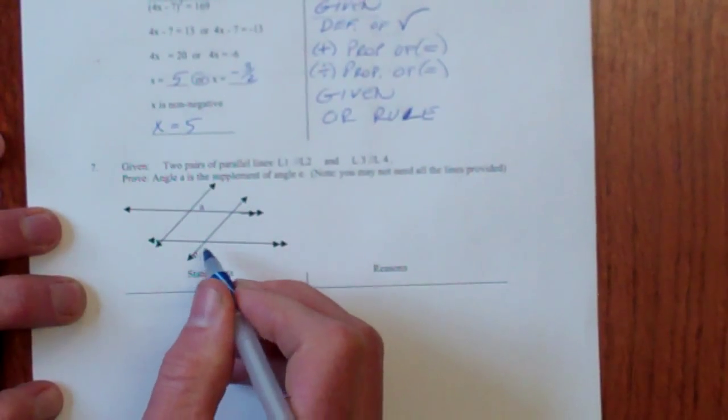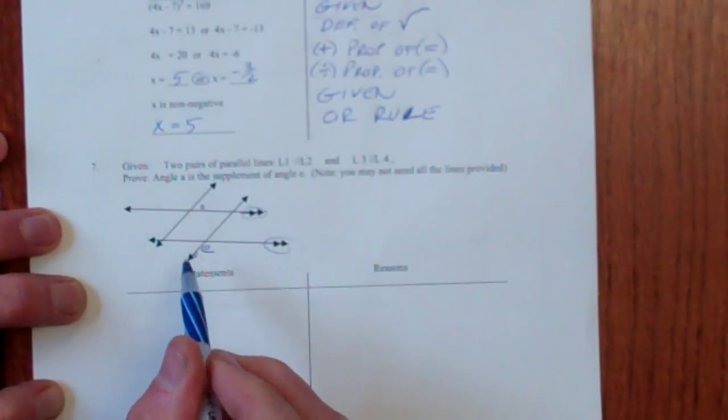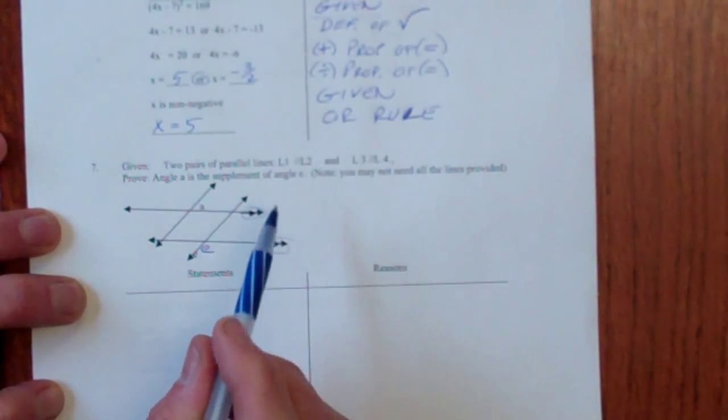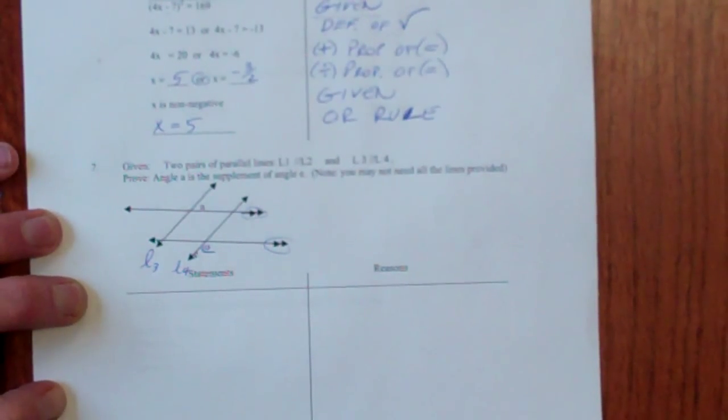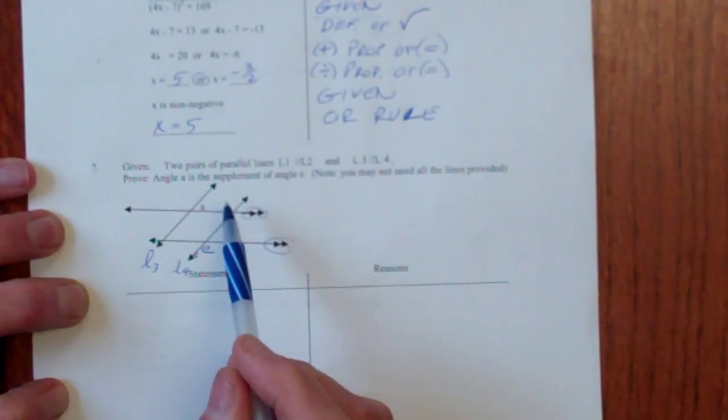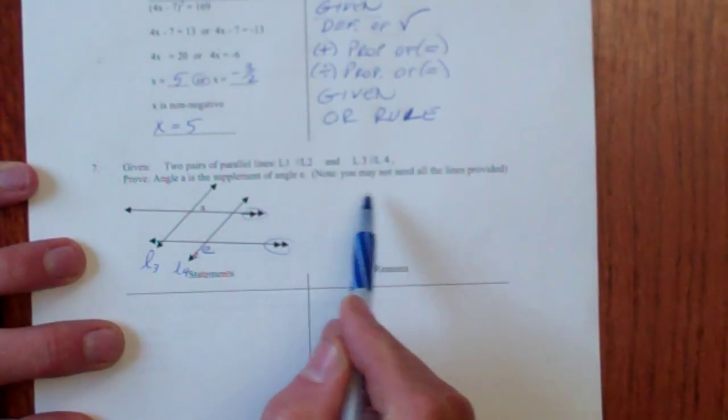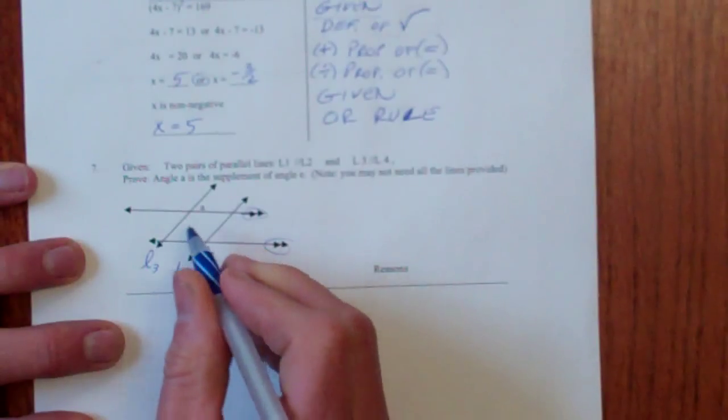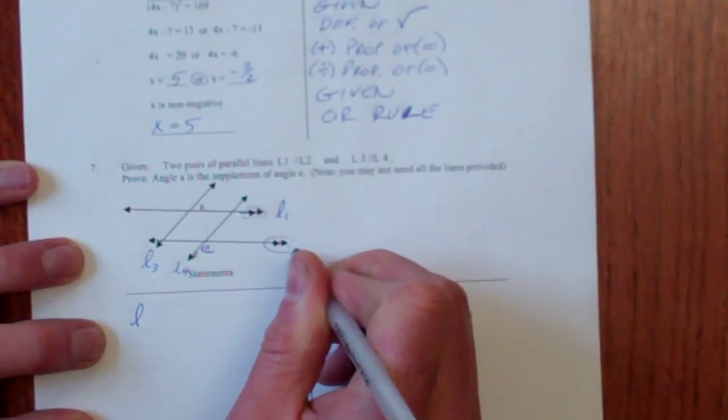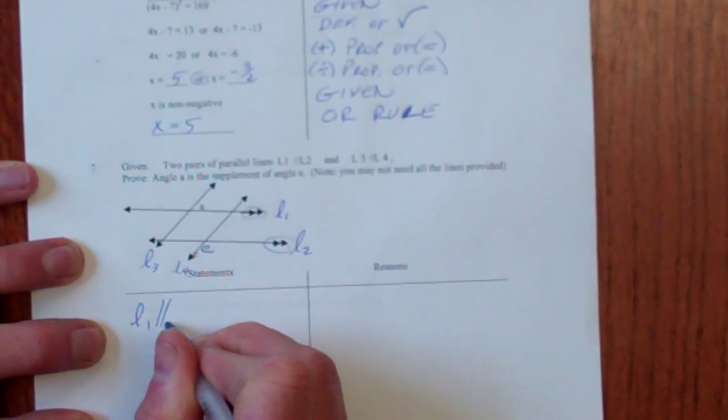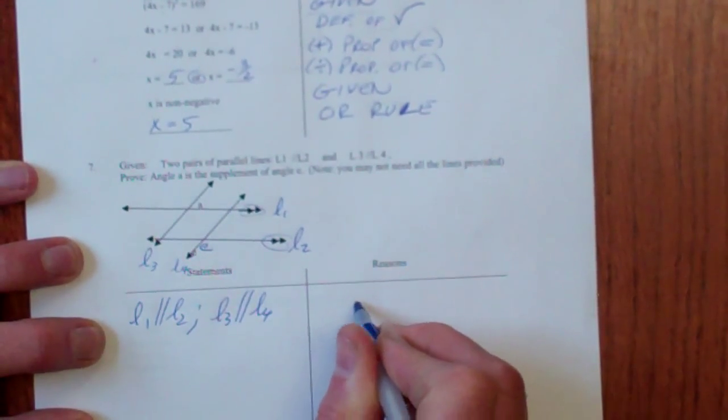Okay, on to another one of these geometric proofs. Sorry, this E is a little bit out of whack down there. These are parallel. And I think it says L1 and L2 are parallel. Oops, that got left off. L3 and L4. I think you can figure that out. Prove that angle A and angle E are supplements. Alright? You may not need all of these lines provided. You can add extra letters or numbers.